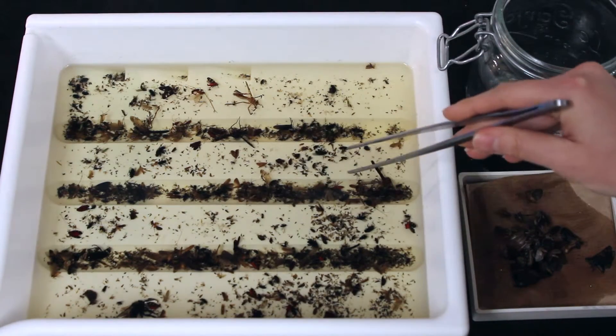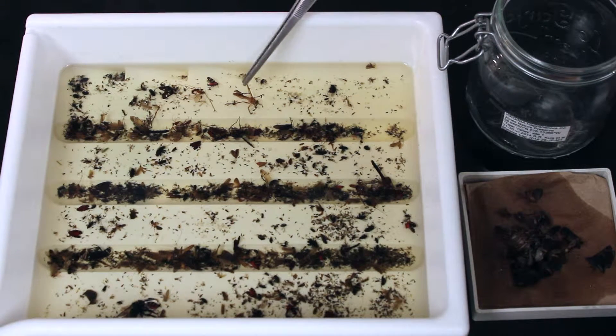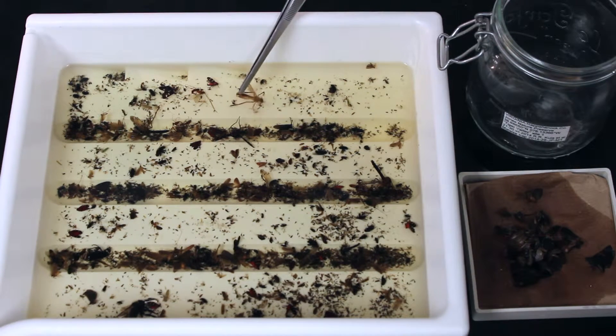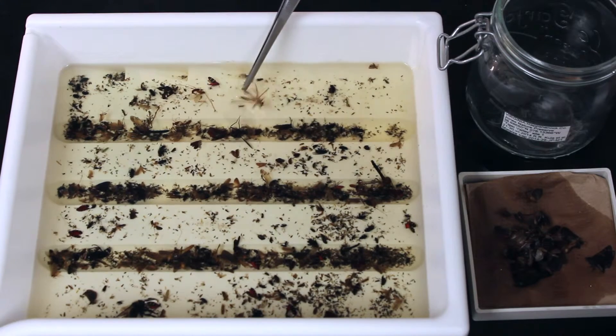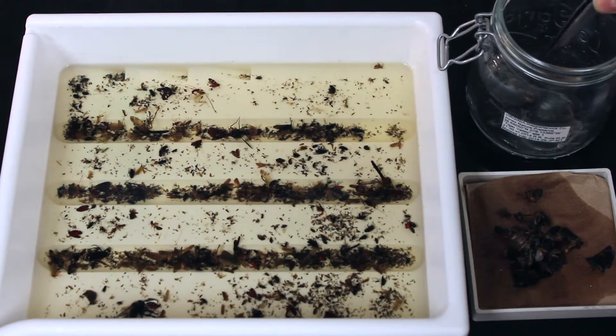We're looking for easily identifiable non-target taxa. For example, this dipteran is very easy to pick out. So we give them a shake, make sure nothing's attached to them, and place them in our bale top jar.